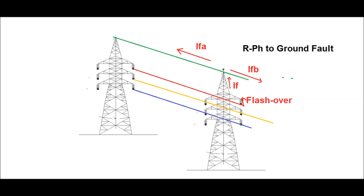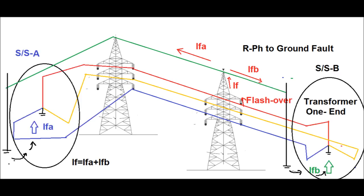For example, if a phase-to-ground fault occurs due to collapse of an insulator — for example, in the R-phase — then a zero sequence current flows from the R-phase to the tower body, and via the earth wire the current will flow to the nearby substation. Thereby it provides the return path for any phase-to-earth or phase-to-ground fault.